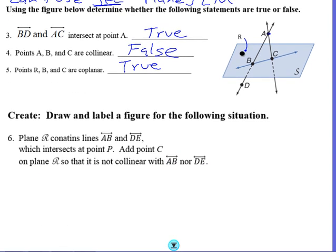Alright, and the last little section here is a little drawing section where you're going to draw and label a figure for the following situation. Plane R contains lines AB and DE, which intersect at point P. So, draw a big plane. We can label it fancy R. That's a terrible fancy R.